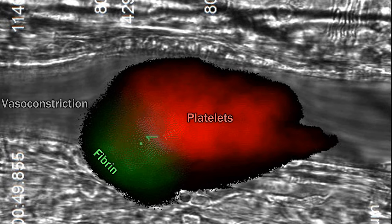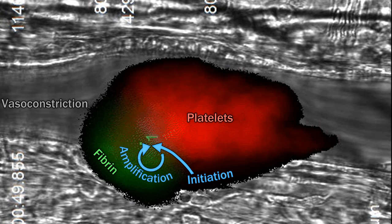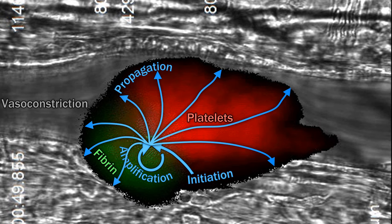Next we have secondary hemostasis involving coagulation factors leading to the production of fibrin. Coagulation can be divided into initiation, amplification, propagation, termination, and finally lysis. This process happens simultaneously and synergistically with the adhesion, activation, and aggregation of platelets.